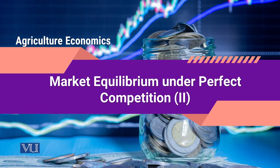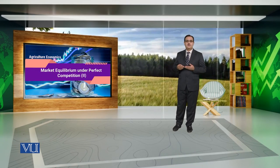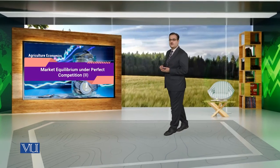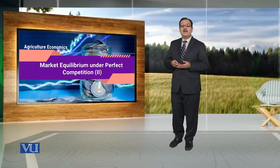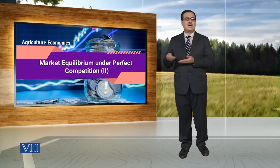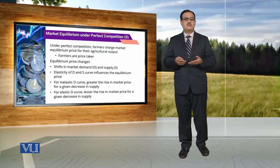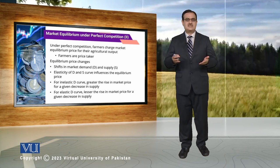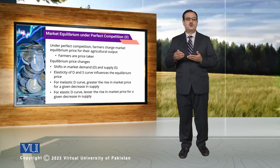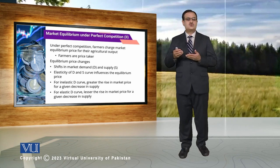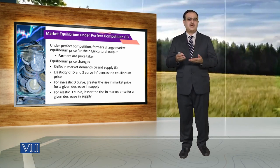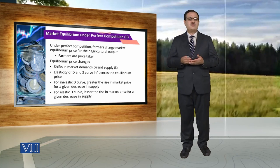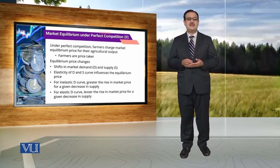Market equilibrium under perfect competition. When we talk about perfect competition, a perfectly competitive market is a market where producers have no influence over the price that prevails in the market. In fact, in this market producers are price takers. When we talk about farmers, they basically produce their output in a perfectly competitive market. An individual farmer has no control over the price of the agricultural output they produce.